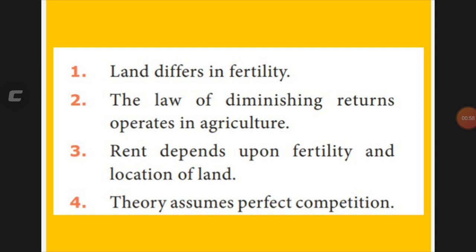David Ricardo has given some assumptions for his theory. The first assumption is that land differs in fertility — land near a river has different fertility from land far away. Next, the law of diminishing returns operates in agriculture, meaning when land is used year after year, its fertility won't be destroyed but can be reduced. Rent depends upon fertility and location — land near a river has more fertility, so the rent will also be higher.